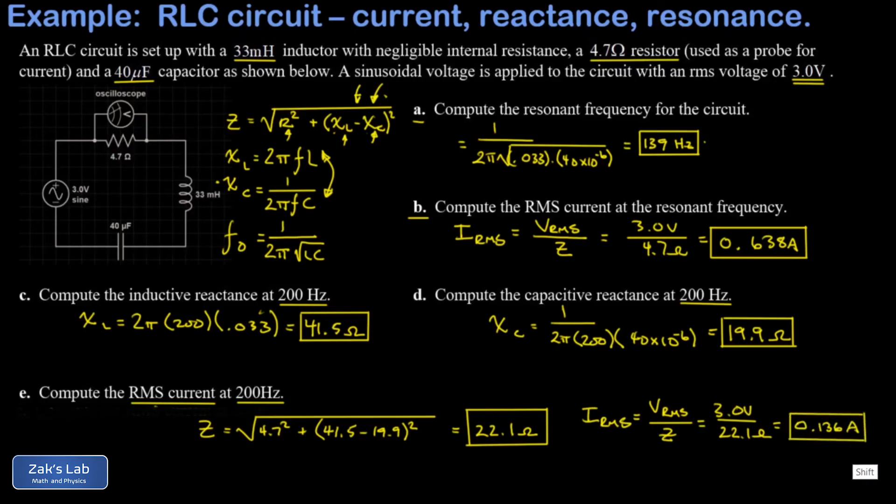And as we expected, this is a lower amount of current than we got when we were driving the circuit at its resonant frequency. At the resonant frequency, we're maximizing the current for the particular voltage that we're applying to the circuit.